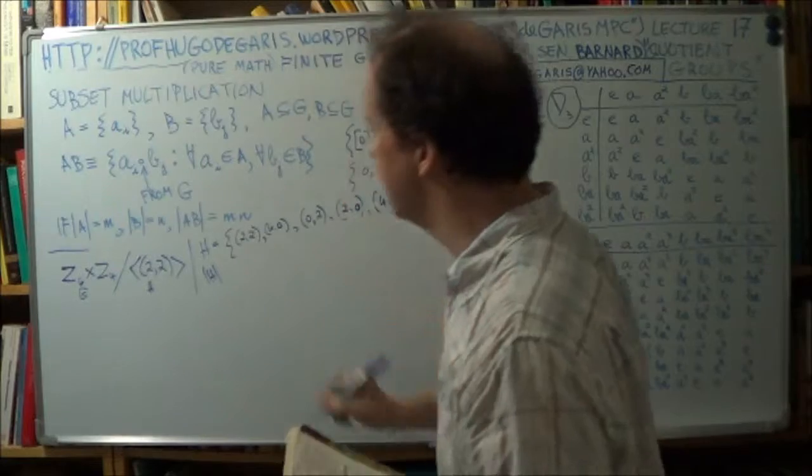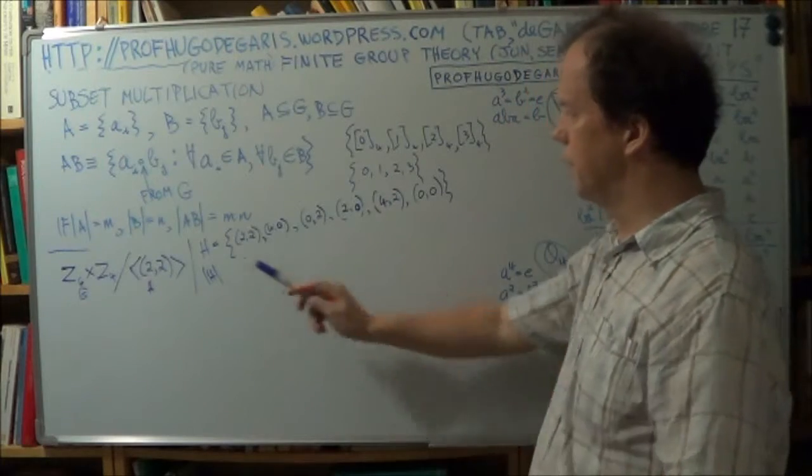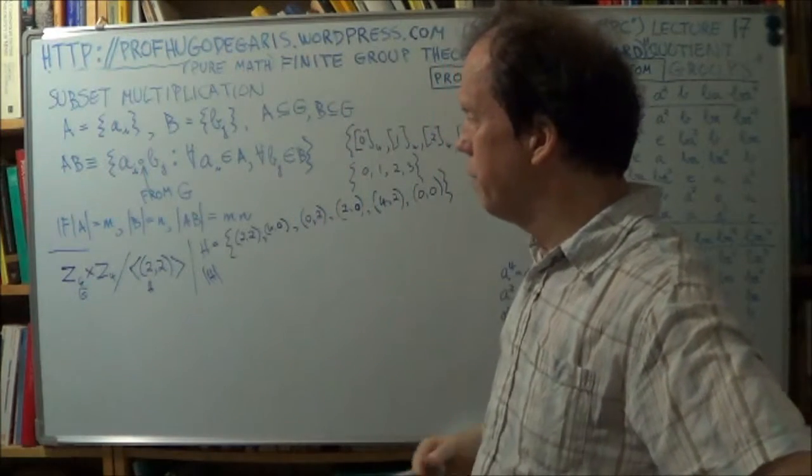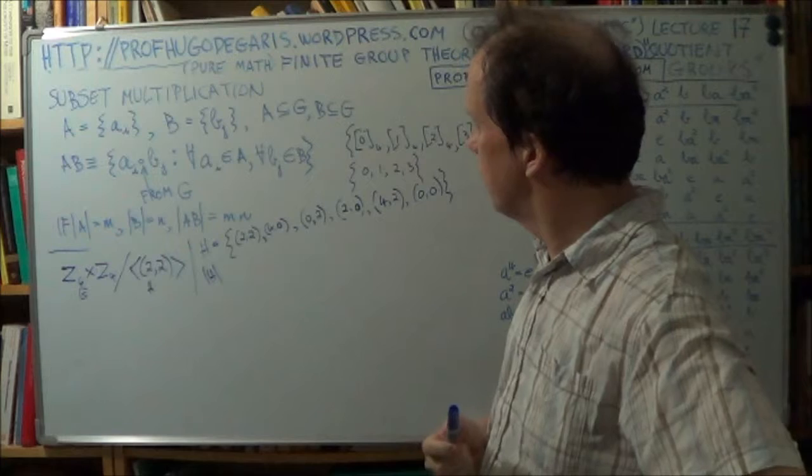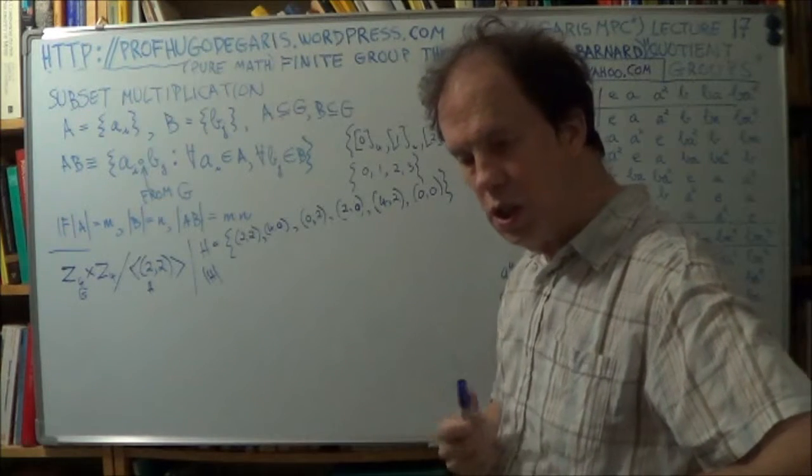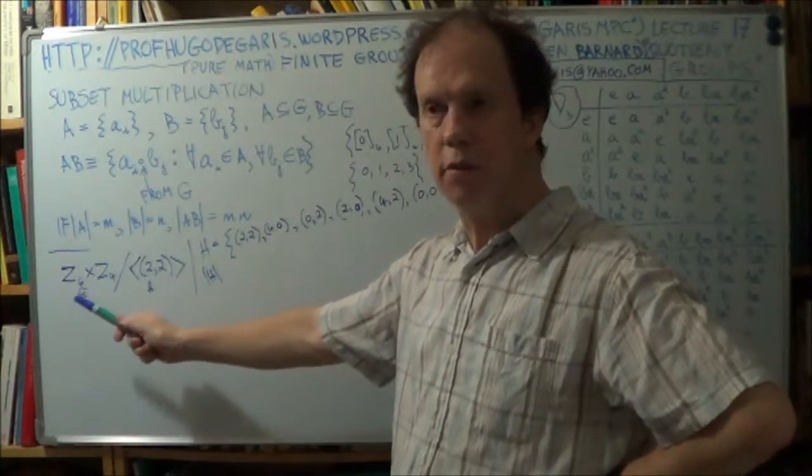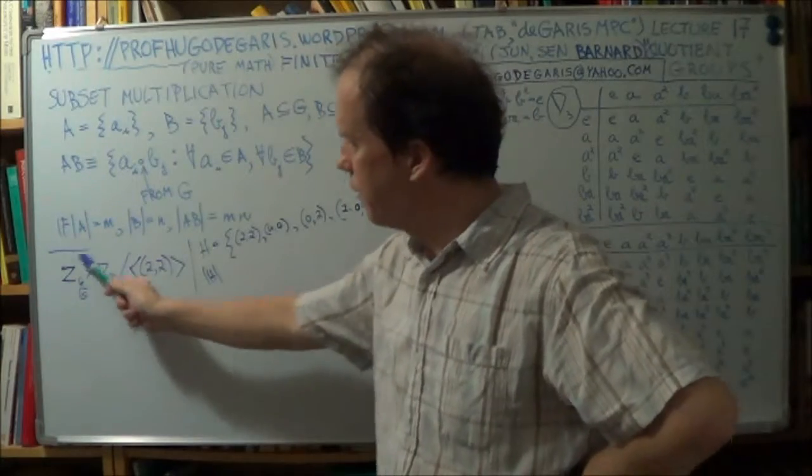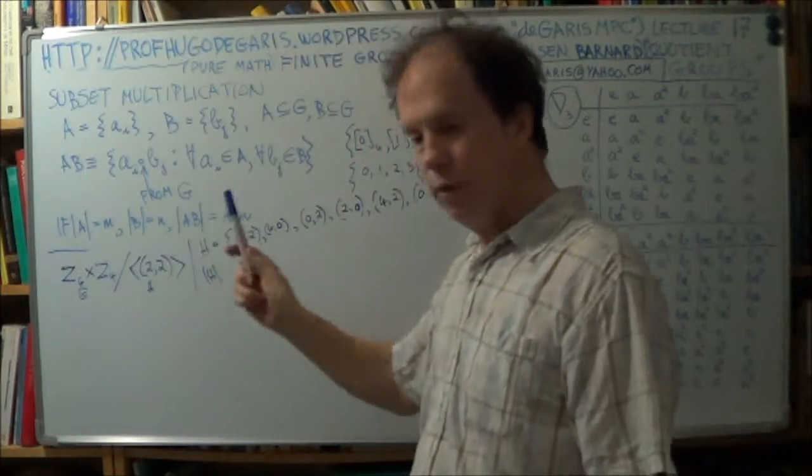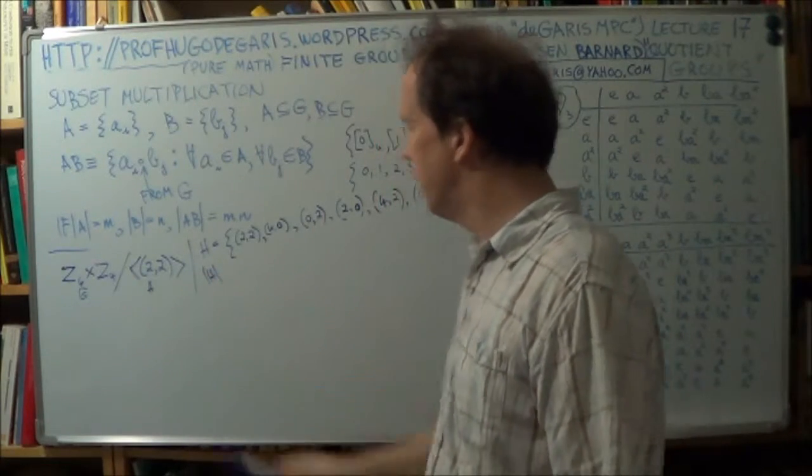Right? So, that means the size of H, now this group is, it's abelian, isn't it? Because we're just talking addition of, we're just adding numbers, effectively. So A plus B is equal to B plus A. So that's abelian? Yeah, that's abelian. Because Z4 times Z6, same thing. Okay, so that's abelian, therefore any subgroup is normal. Right? Therefore this is normal. This is normal.